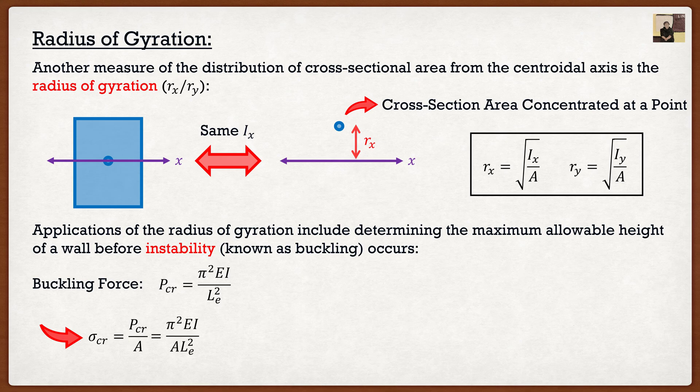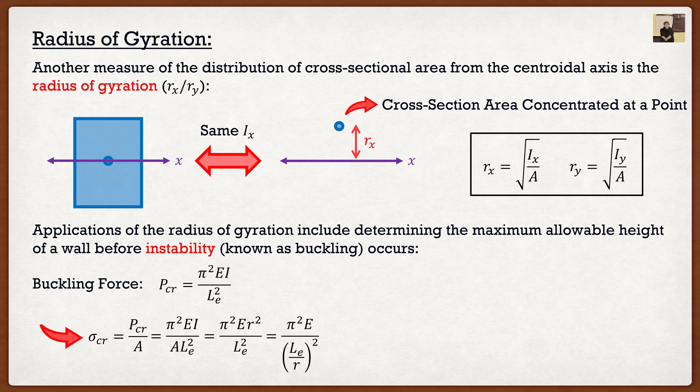Now if we look in here, we actually see something special. We have an I at the top and we have an A at the bottom, moments of inertia divided by area. If we look up at the radius of gyration formula, we basically have the exact same thing. So I can substitute the radius of gyration into this formula. And then if I were to rearrange it, I get the following where I get pi squared E, where E was related to the material properties, divided by this term right here, where it's basically the height of our object divided by radius of gyration.